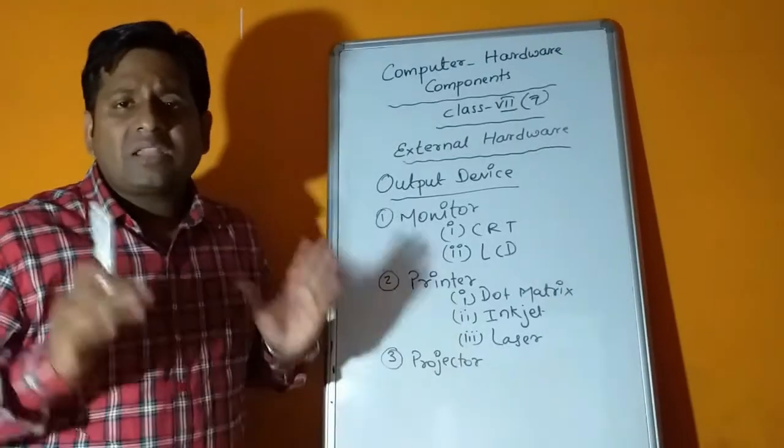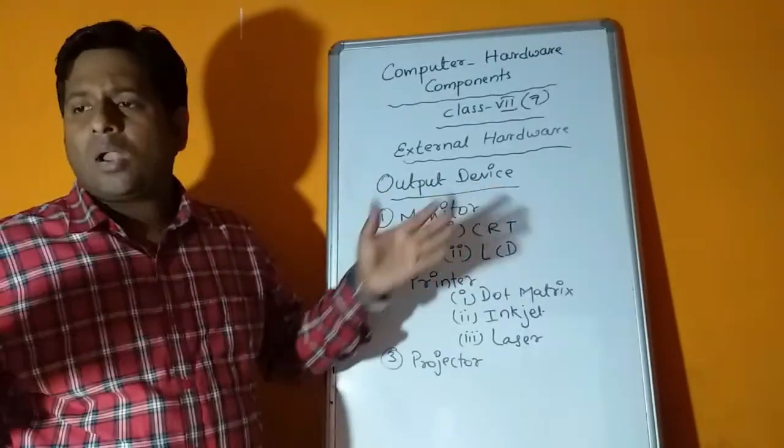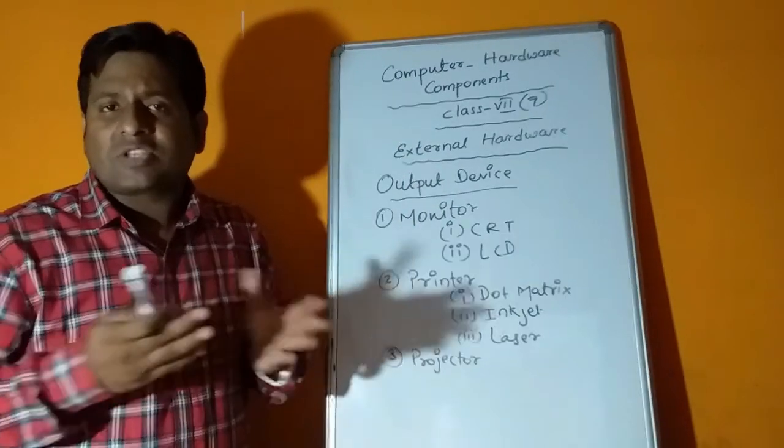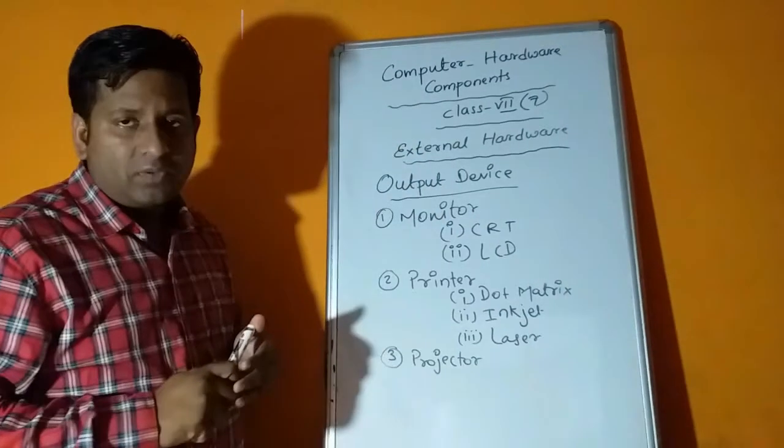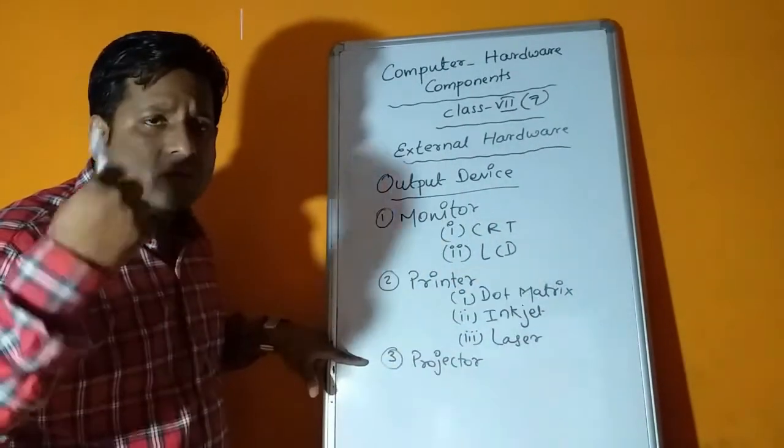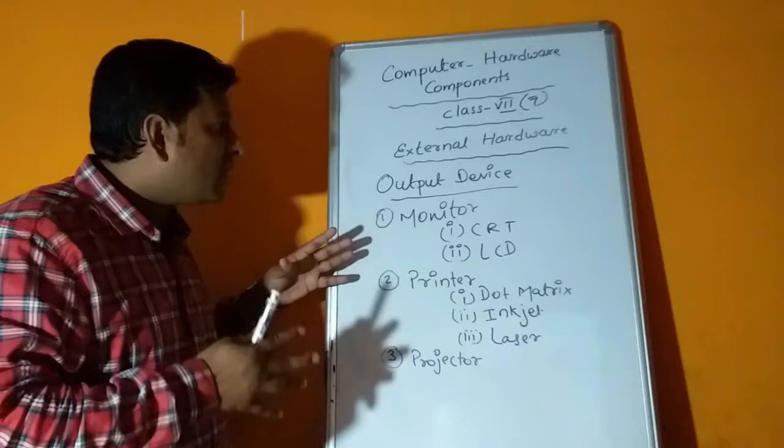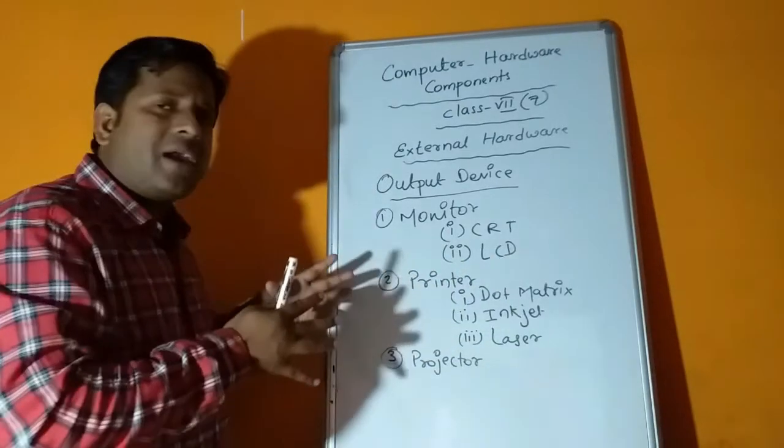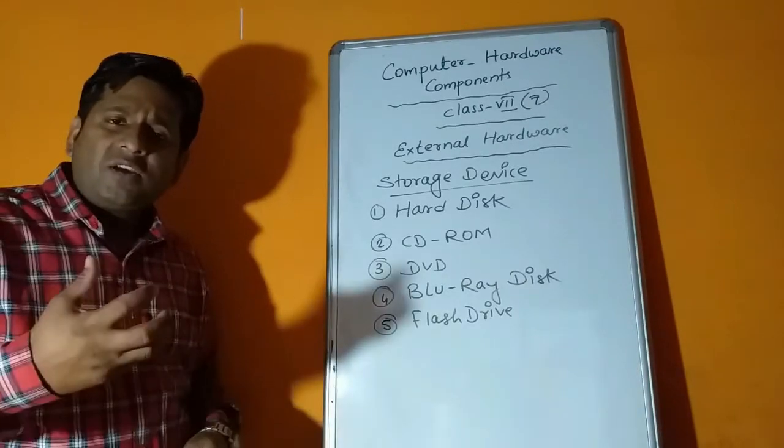The third type is projector, also known as LCD projector. With the help of projector we don't need a monitor. We can see the images, videos, pictures or whatever is in the computer on a big screen, maybe a wall or a projector screen. So output devices are monitor, printer and projector. Even speakers for listening to songs, plotters for big quality printing - they are output devices used based on our requirement.